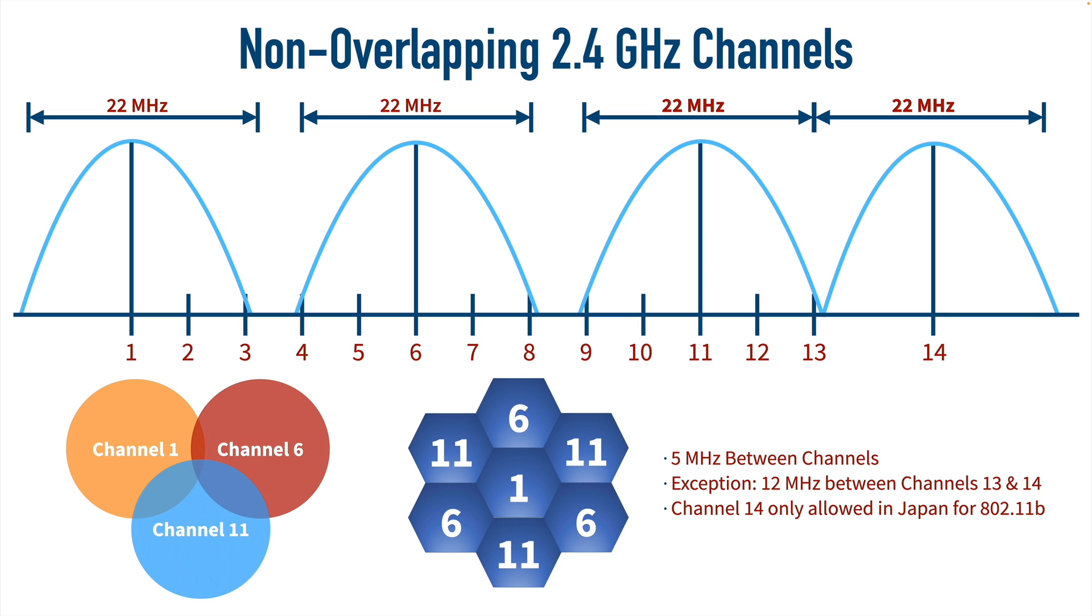But again, we don't have that limitation for the 5 or 6 gig bands. And that's going to allow us to bond multiple channels together, giving us channel widths on the order of 40, 80, maybe 160 MHz. That's going to allow more simultaneous communication within a channel. And we can have multiple non-overlapping channels in the 5 and 6 gig bands, even though we've done channel bonding.